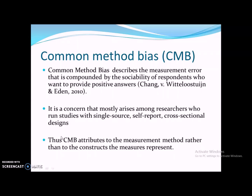Common method bias is a concern that mostly arises among researchers who run studies with a single source — for example, collecting all data from a single source where respondents self-report their impressions or feelings about the questions asked — and when using cross-sectional data collection methods. Thus, common method bias attributes to the measurement method rather than to the construct of the measures.